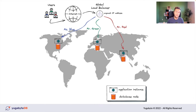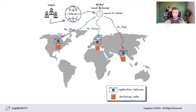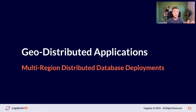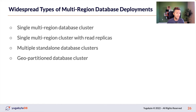We need to discuss multi-region distributed database deployments. There is no silver bullet — you'll pick based on your use case. Over the next 10-15 minutes, we'll review four options: first, a single multi-region database cluster; second, a primary cluster with read replicas in distant locations; third, multiple standalone database clusters; and fourth, a geo-partitioned database cluster — something new available in modern databases. There are always trade-offs with each option.